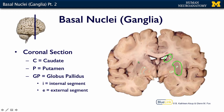The next structure in is the globus pallidus. Globus pallidus means pale globe, and you can see that it is actually a little paler than the caudate and putamen. The globus pallidus has two subdivisions: the internal segment, which is more medial, and the external segment, which is more lateral.